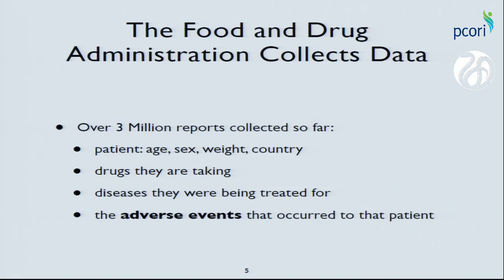What does the Adverse Event Reporting System look like right now? It has over 3 million reports collected. It's an observational clinical data set — one of my favorite types of data sets. They collect sparse data on age, sex, weight, and country of origin, sparse data on the drugs a patient might be taking, sparse data on the diseases being treated for, and slightly less sparse data on the adverse events that occurred. This is a great opportunity to study adverse drug events in a large clinical population.